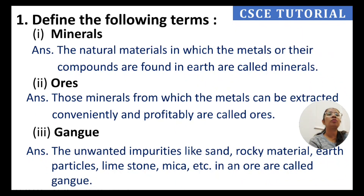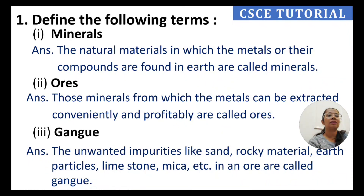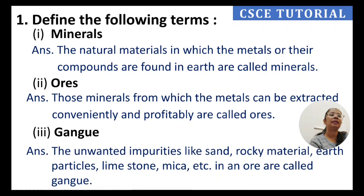Gangue: the unwanted impurities like sand, rocky material, earth particles, limestone, mica, etc. present in an ore are called gangue. Minerals are natural materials found in the earth. From those minerals where profitable extraction is possible, we call them ores. The unwanted impurities that come along with the ore are called gangue.